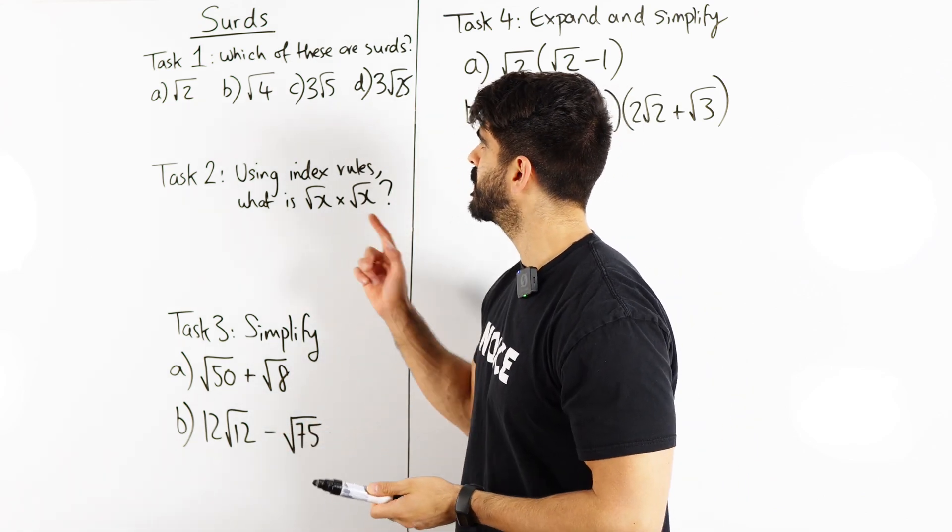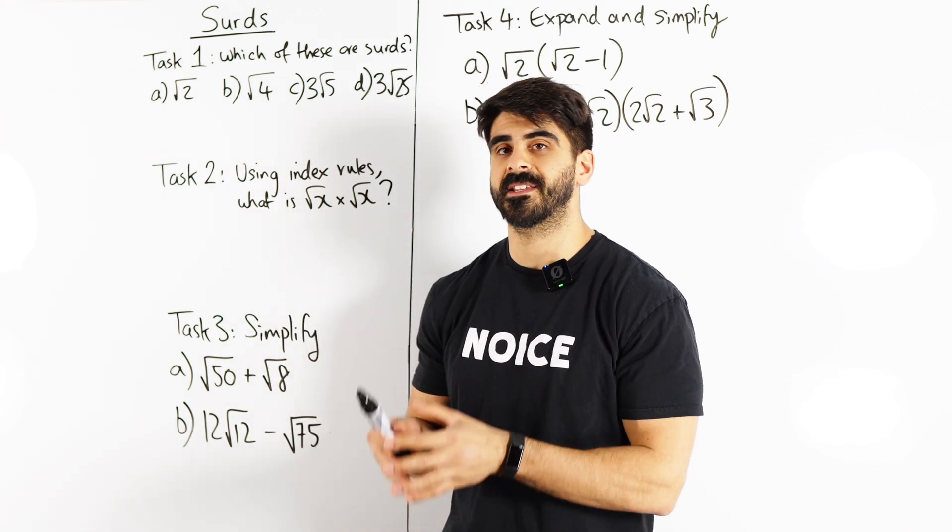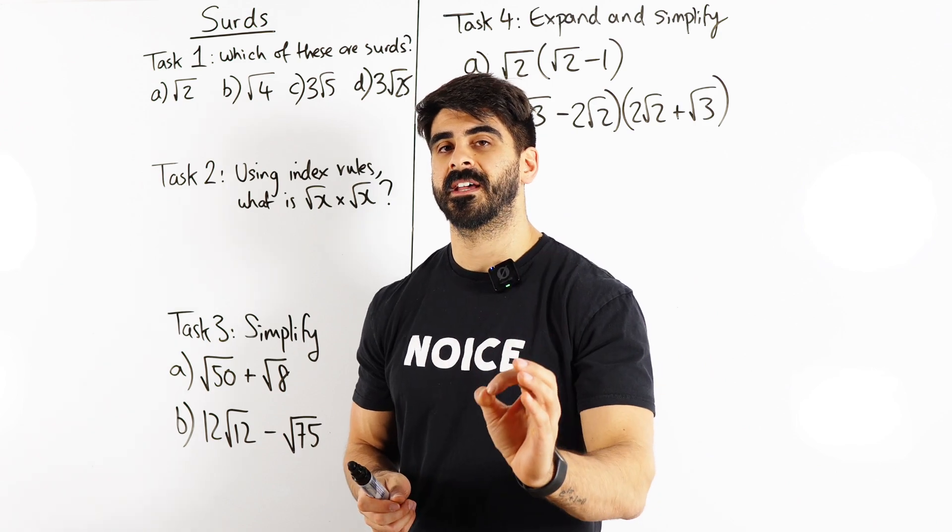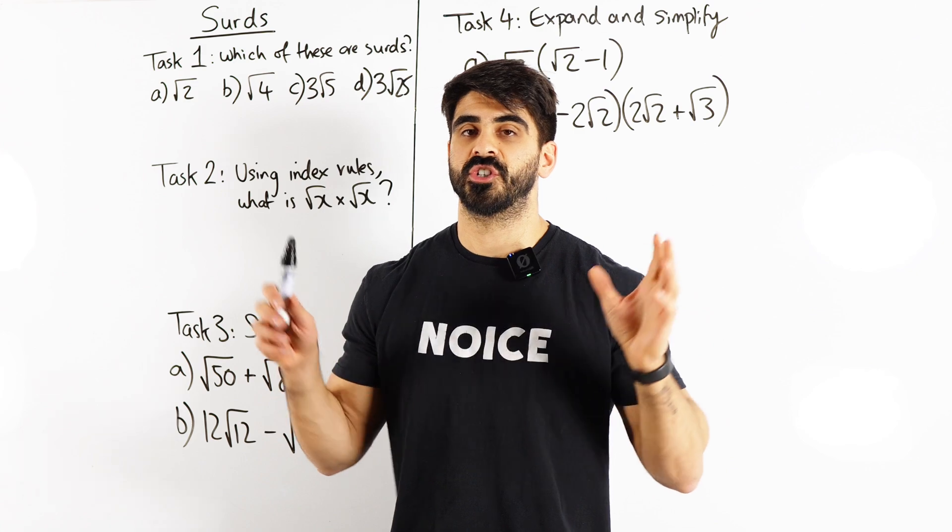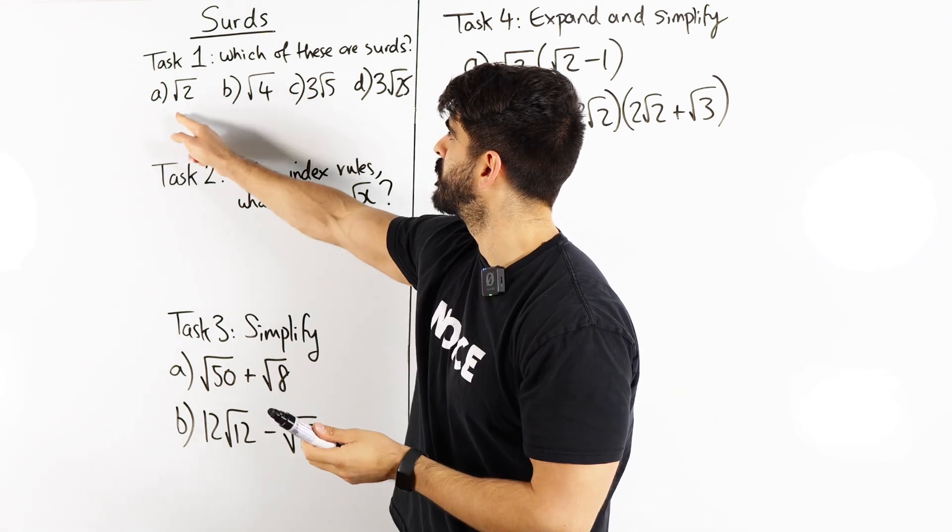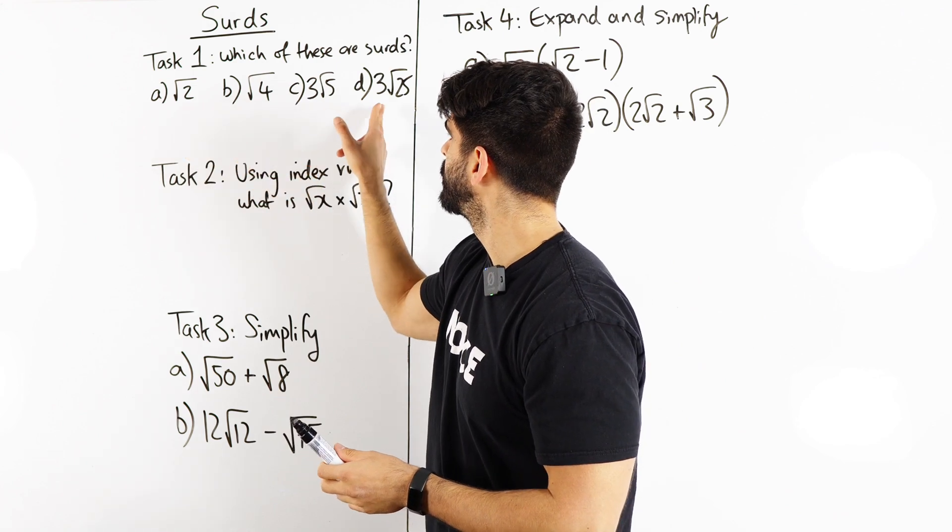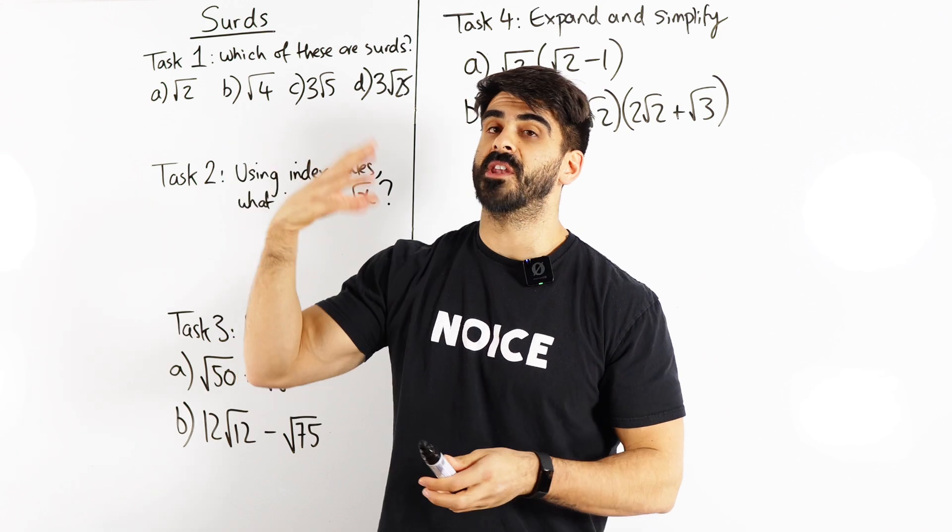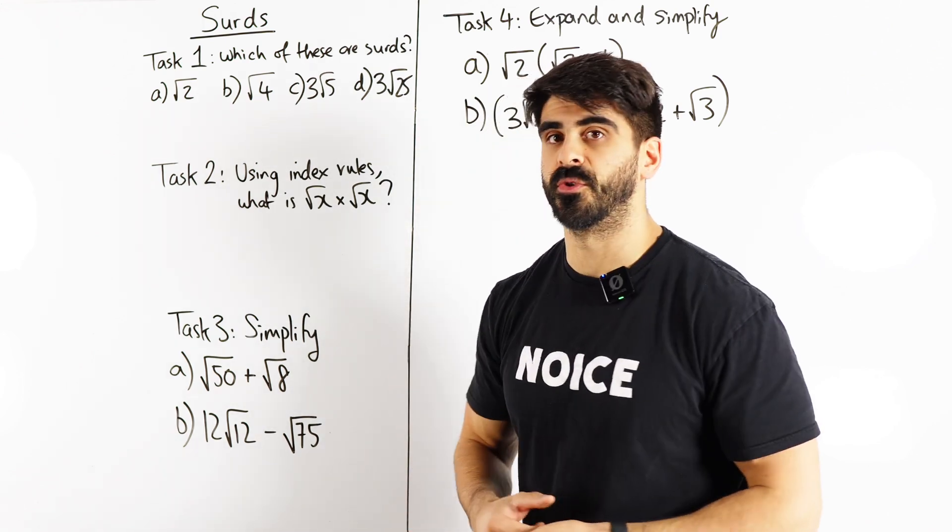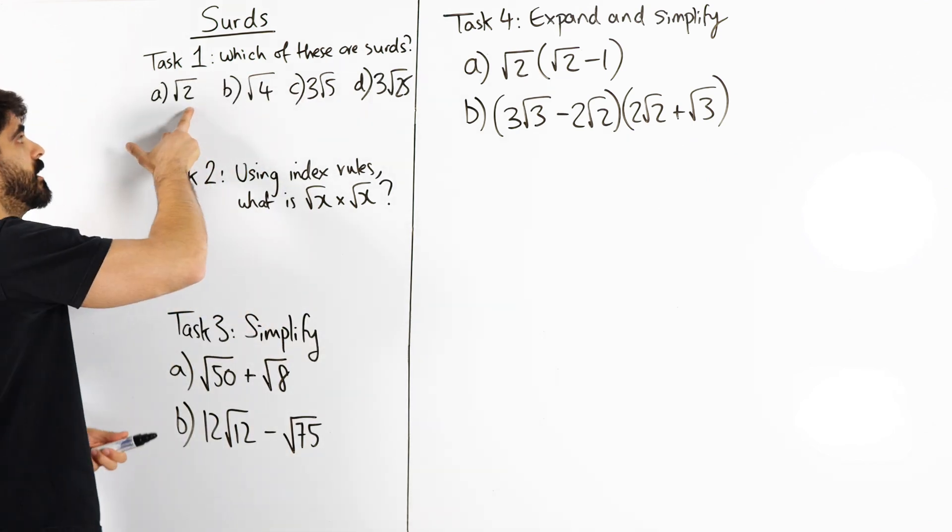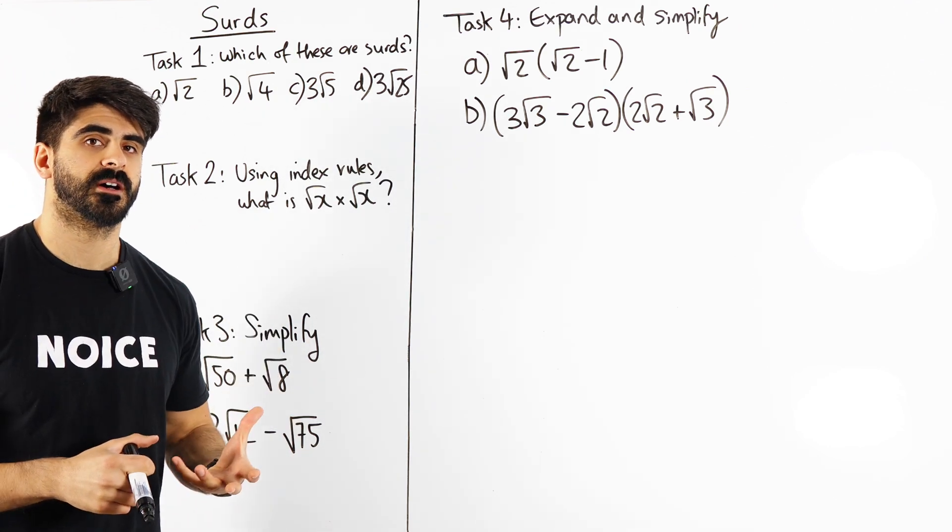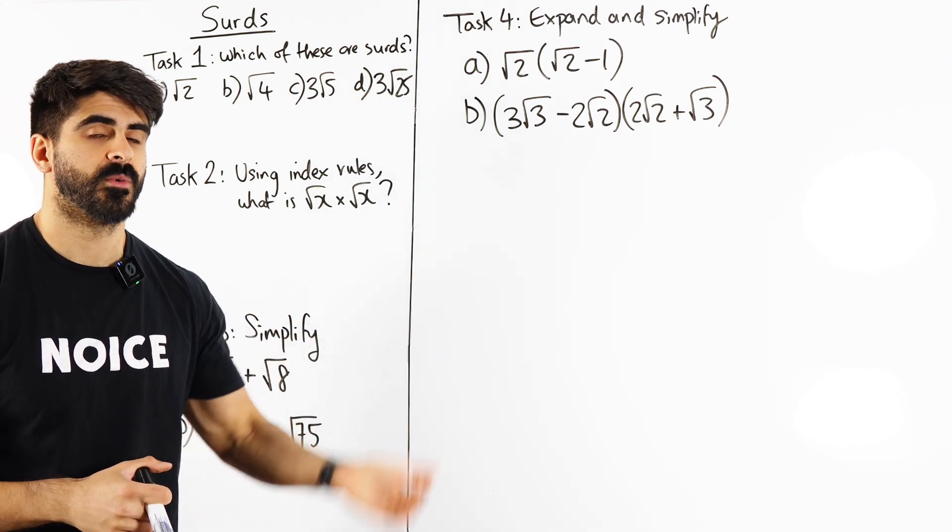The first task is which one of these are surds? Now what is a surd? A surd is a mathematical expression, an expression meaning it doesn't have any equal signs, it's just a number. So it's a mathematical expression that contains an irrational root. What is an irrational root? Generally speaking it most commonly involves a square root but it can be a cube root, fourth root, fifth root, etc. Generally speaking at GCSE anyway, we use a square root that cannot be simplified whereby the number can't be rewritten without this root. So for example root 2, well 2 is not a square number so you cannot root it to give us an integer. So when I say an irrational number, an irrational number is a number that cannot be represented as a fraction where the numerator and denominator are integers.